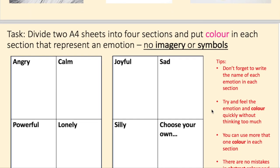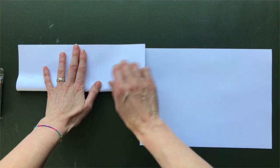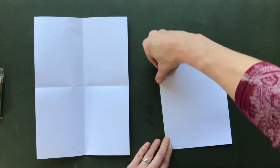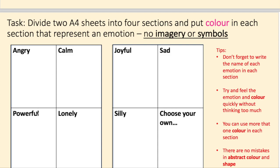For the second part of this task, I would like you to create another two A4 sheets. Fold them in half, and then fold them in half again, and write in the same words that you wrote in before. And the last one, again, choose your own. But this time, put color in each section.